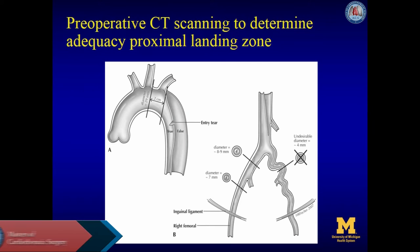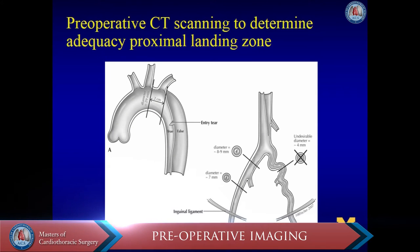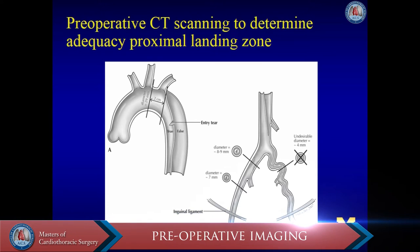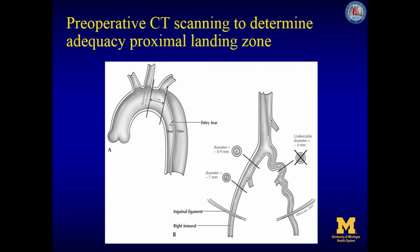Preoperative CT scanning is essential to determine adequacy of the proximal landing zone. We typically extend coverage up to the left subclavian artery in cases of type B aortic dissection, and often complete coverage of the origin of the left subclavian artery is needed to obtain a 2-centimeter proximal landing zone. As shown in section A, we obtain measurements at the proximal edge of the pathologic problem and then at 1-centimeter proximal increments to determine the correct stent graft size. The selected stent graft has a diameter no more than 10% larger than the aortic diameter at the landing zone. For section A, a 31-millimeter graft would be selected. Finally, a short stent graft of 10 to 15 centimeters is commonly used in our experience to avoid extensive intercostal artery coverage.